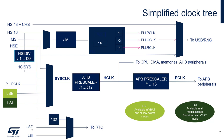For the RTC, you can clock it from the LSI — the internal low-speed oscillator — or connect a 32 kHz crystal for better accuracy. You also have the option to use HSE divided by 32 as the RTC clock source.